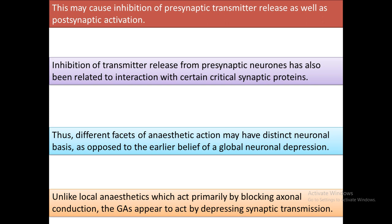Inhibition of transmitter release from the pre-synaptic neuron has also been related to interaction with certain critical synaptic proteins. Different facets of anesthetic action may have distinct neuronal bases, as opposed to the earlier belief of global neuronal depression. Unlike local anesthetics which act primarily by blocking axonal conduction, general anesthetics appear to act by depressing synaptic transmission.